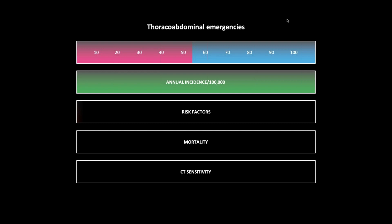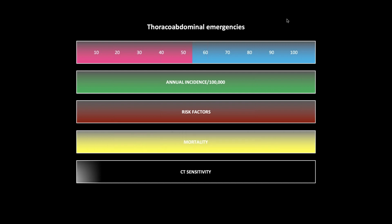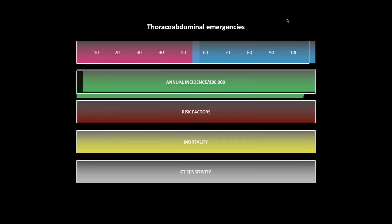We will also show the annual incidence of each pathology per hundred thousand in green on the second line, icons representing risk factors in red, the percentage mortality for that entity, and lastly the CT sensitivity. All of these stats were taken from the NCBI — the National Center for Biomedical Information.